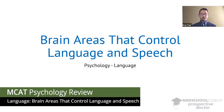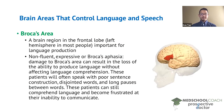In this video we're going to go over the brain areas that control language and speech. The first area is Broca's area. As you can see in this diagram, Broca's area is a brain region in the frontal lobe. For most people, Broca's area is located in the left hemisphere, and Broca's area is important for language production.